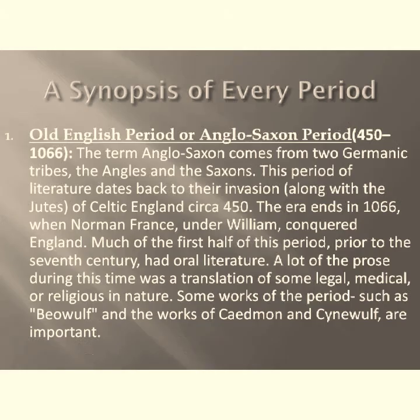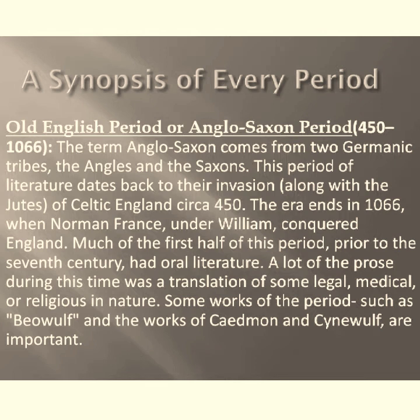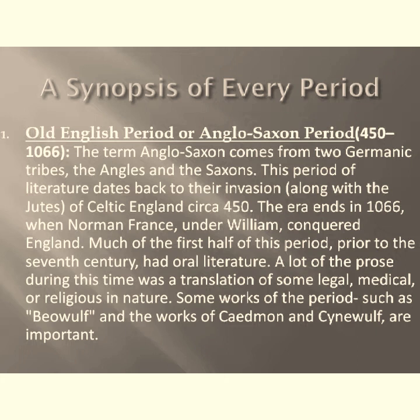The first period is the Old English period, or Anglo-Saxon period. The term Anglo-Saxon comes from two Germanic tribes: the Angles and the Saxons. This period of literature dates back to the invasion of Celtic England circa 450 AD and ends in 1066 when Norman France under William conquered England. Much of the first half of this period, prior to the seventh century, had oral literature. A lot of the prose during this time was translation of legal, medical, or religious works. Key works include Beowulf and the works of Caedmon and Cynewulf.